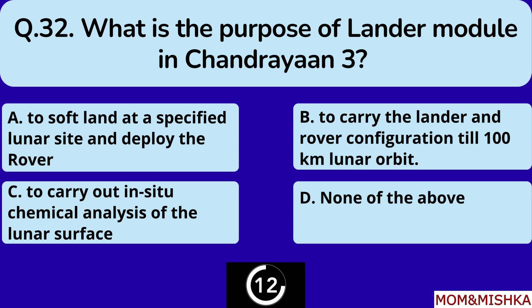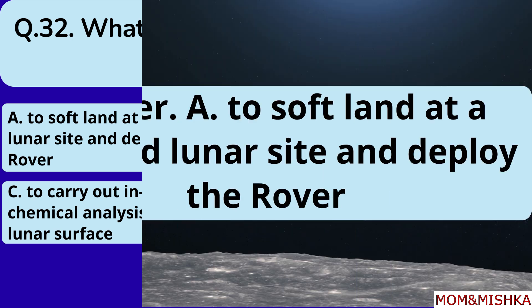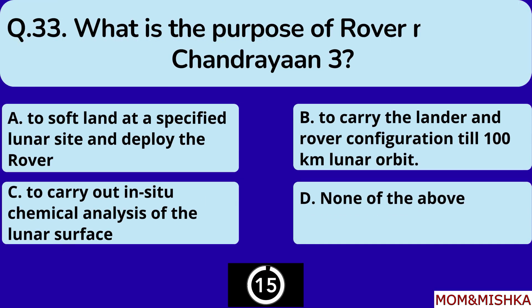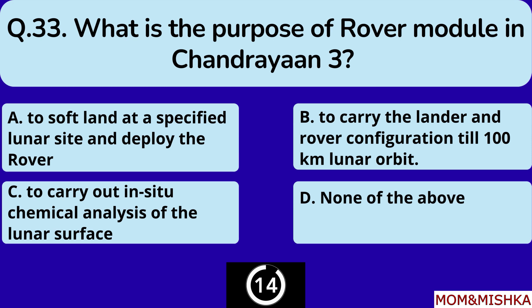What is the purpose of the lander module in Chandrayaan-3? Option A — to soft land at a specified lunar site and deploy the rover.